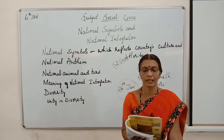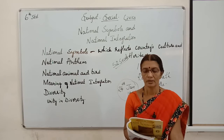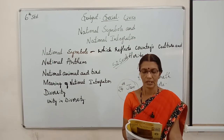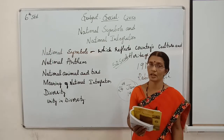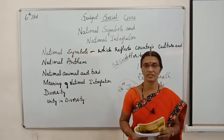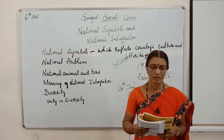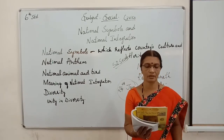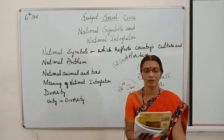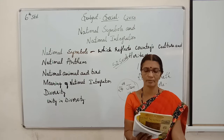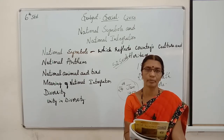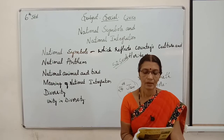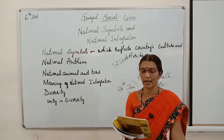Our national emblem was adopted on 26th January 1950. In the picture, only three lions are seen. A Devanagari inscription called Satyameva Jayate, meaning 'Truth alone prevails', is found at the bottom of the base. It is taken from the Mundaka Upanishad.